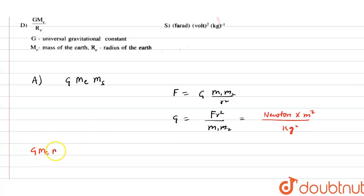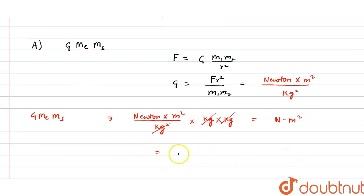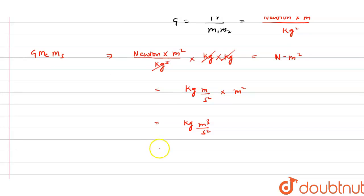Now for G·Me·Ms: substituting the unit of G gives Newton·m²/kg² × kg × kg. The kilograms cancel out, leaving Newton·m². Expanding Newton as kg·m/s², we get kg·m³/s², which can be written as kg·m³·s⁻².